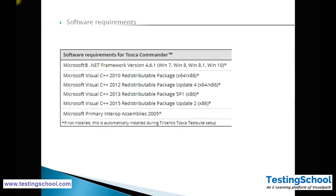For installing the Tosca software, we require some prerequisites. The .NET Framework has to be installed. Other required components include Microsoft .NET Framework version 4.6, Microsoft Visual C++ 2010 Redistributable Package, 2012, 2013, and 2015, plus some assemblies. However, if these components are not installed, Tosca will automatically detect and install them.